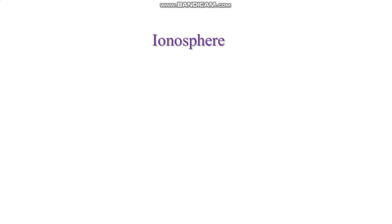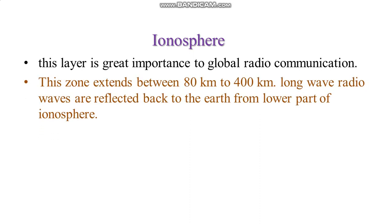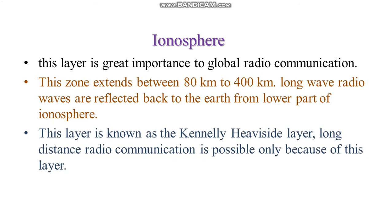The ionosphere is mostly present above the stratosphere. This layer is of great importance to global radio communication and extends between 80 km to 400 km. Long radio waves are reflected back to the earth from the lower part of the ionosphere. This layer is known as the Kennelly-Heaviside layer, and long-distance radio communication is possible only because of it.